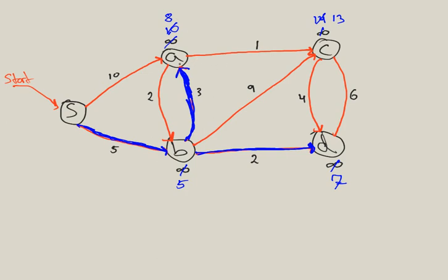We repeat the process. From vertex A we can see B and C. We don't update B because 8 plus 2 is 10, which is greater than 5. However, the edge from A to C only costs 1 unit. So we go from A to C in 9 units because 8 plus 1 is 9, which is less than 13. We update the value of C to 9.